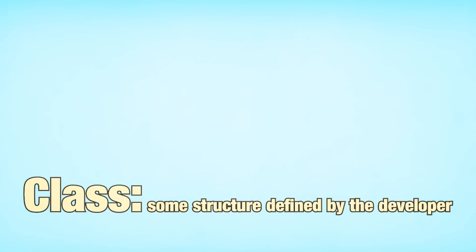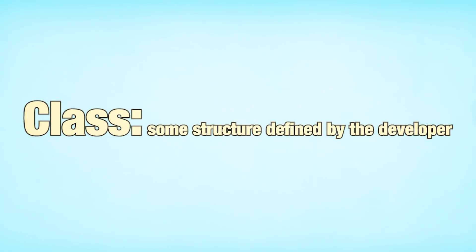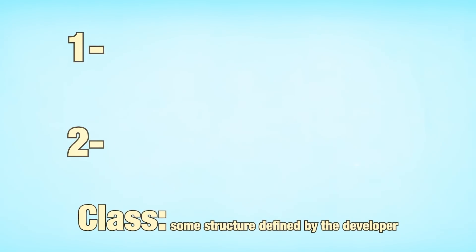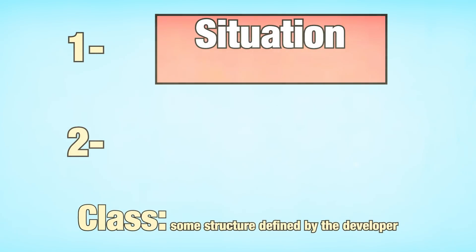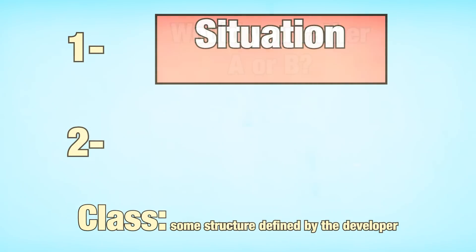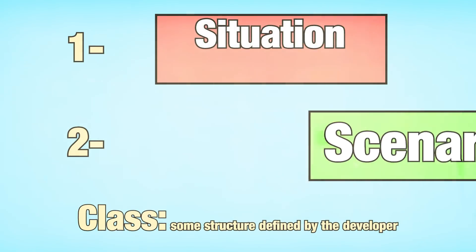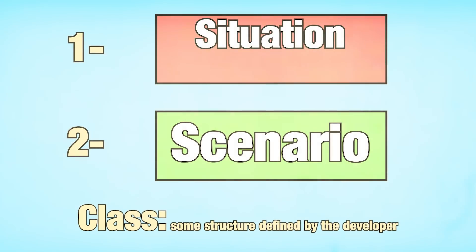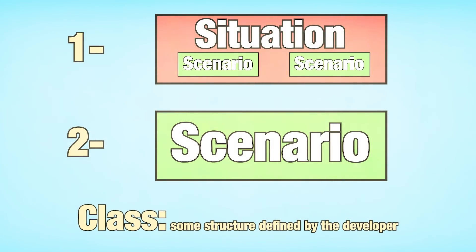So this week's software is actually going to be super simple. But first, let's start by defining some classes. A class is something that we, as software developers, will define ourselves. We'll only be using two classes today. We'll call our first class a situation, which will simply be the completed Would You Rather sentence. And our second class a scenario, which will be one of the two scenarios that make up a situation.